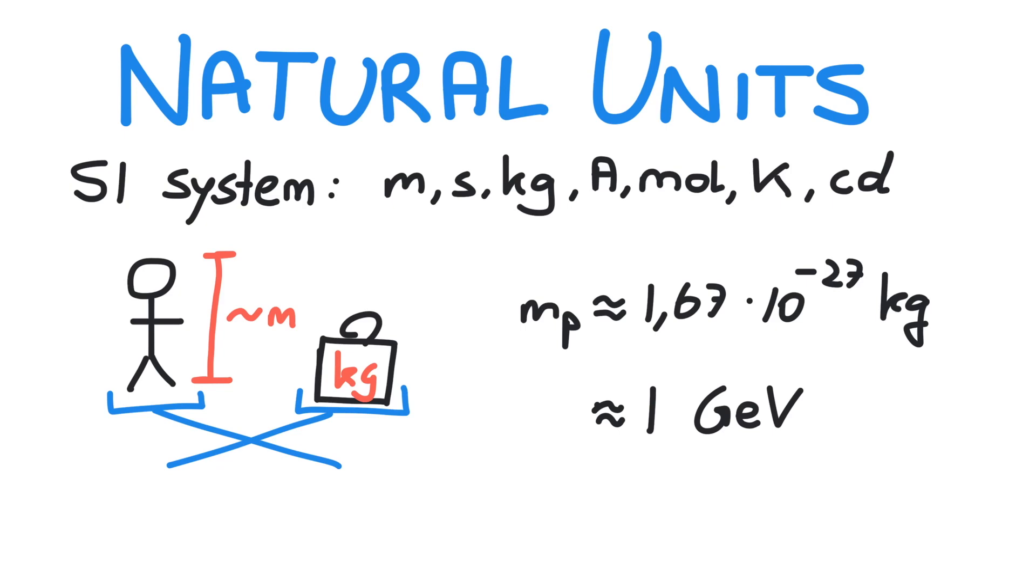So how do we do this? The first step to natural units is to redefine some constants. Let's start with the speed of light. We define c equals 1, not 1 meter per second, just 1.